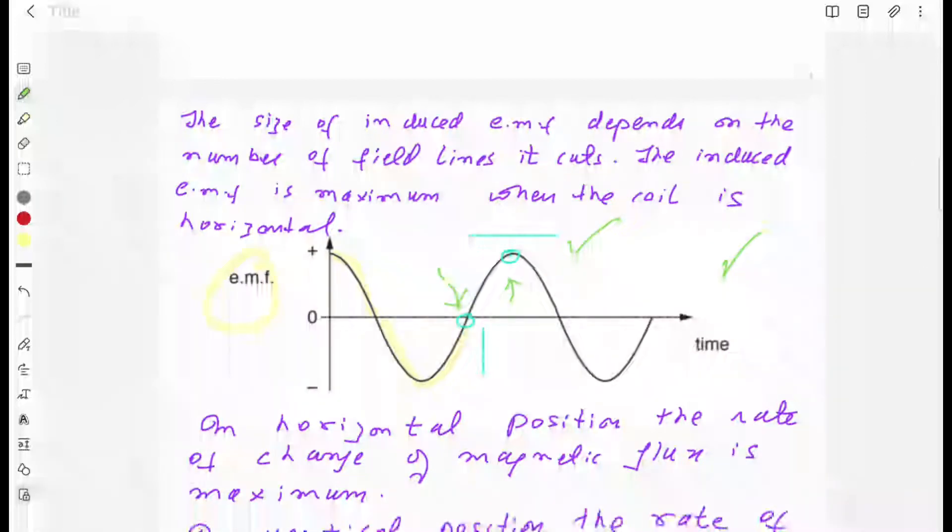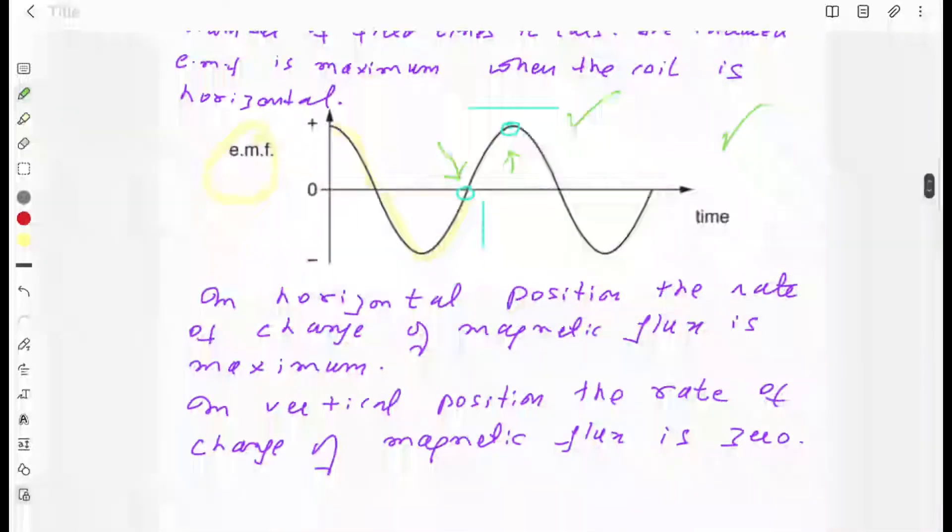The size of the EMF depends on the number of field lines it cuts. The induced EMF is maximum when the coil is horizontal. In horizontal position, the rate of change of magnetic flux is maximum.